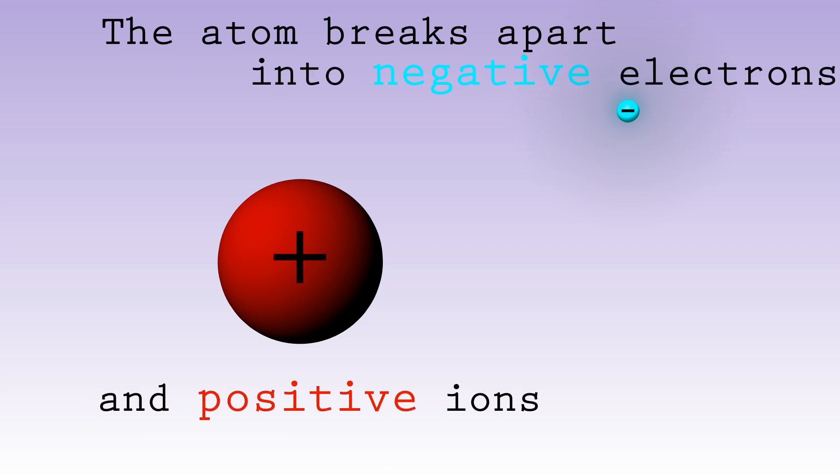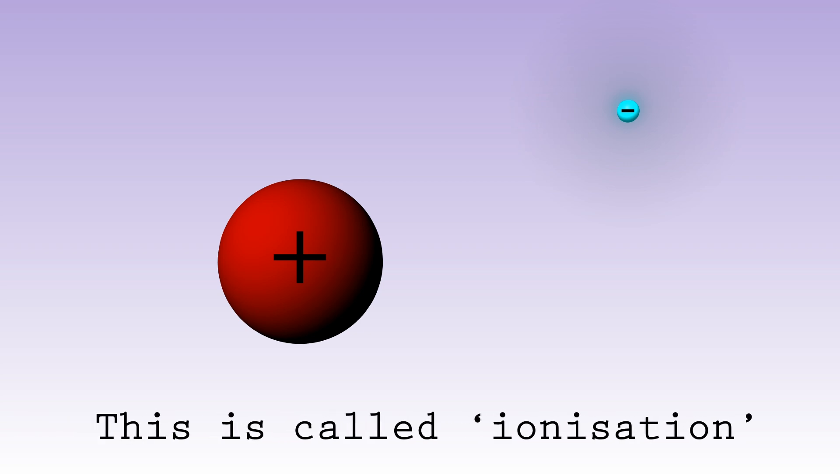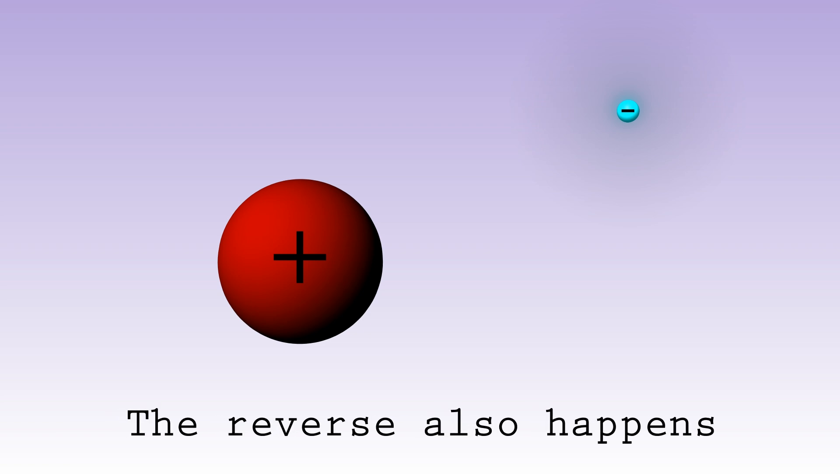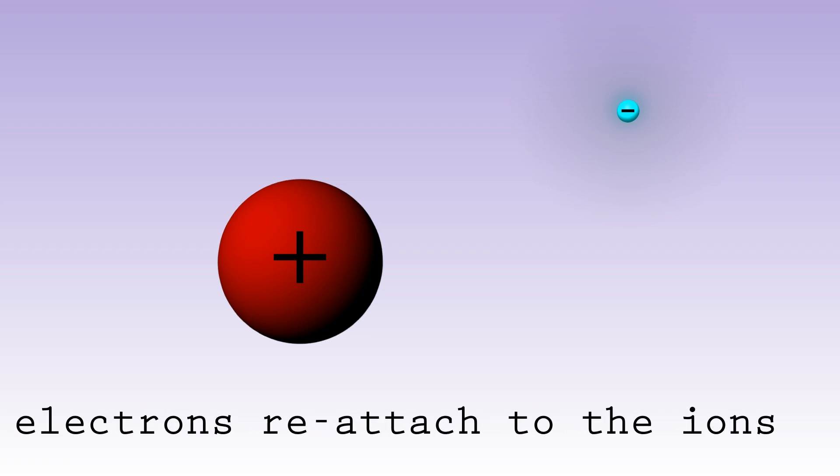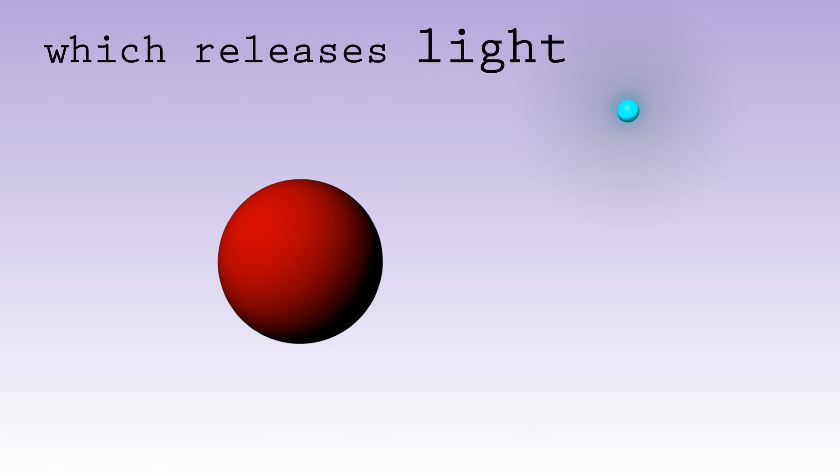Often, the ion and electron join back together because their charges attract each other. This is known as recombination, and when it happens, light is released, and we are left with a neutral atom.